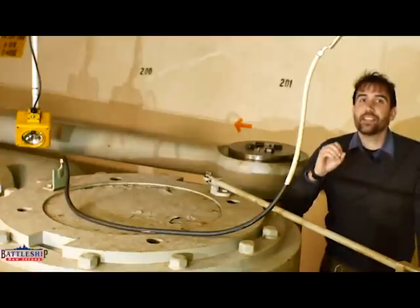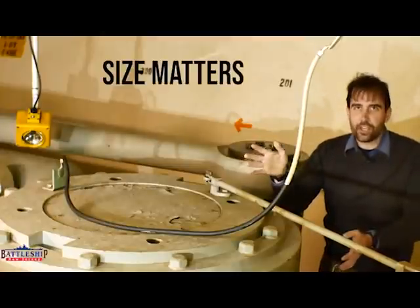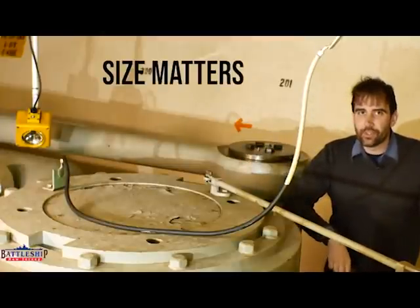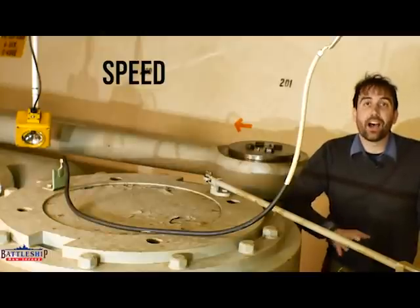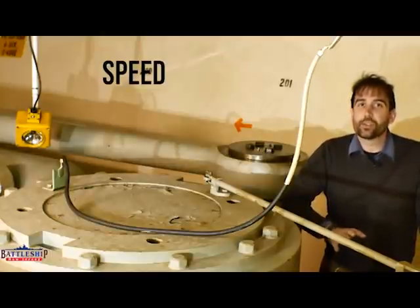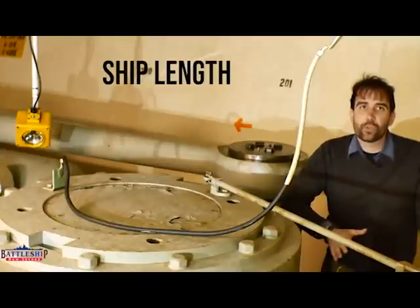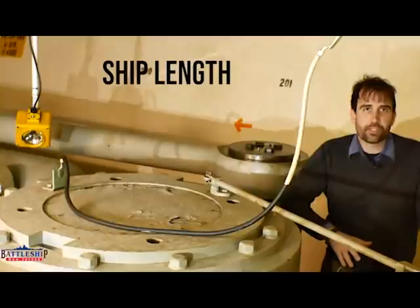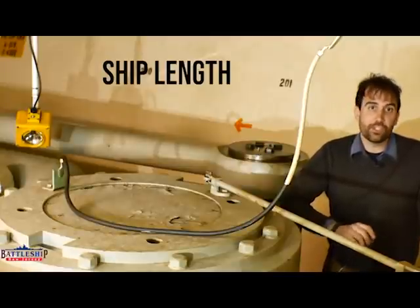So, the things that impact that: one, your rudder size and your number of rudders have something to do with it. Two, your speed has something to do with it. The higher your speed, the larger your tactical diameter is going to be. And three, the length of your ship. Really long ships are going to have a wider tactical diameter than really short ships.